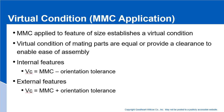For internal features, to get the virtual condition, we take the MMC and subtract the orientation tolerance. For external features — shafts, cylinders, etc. — we take the MMC plus the orientation tolerance to give us the virtual condition.